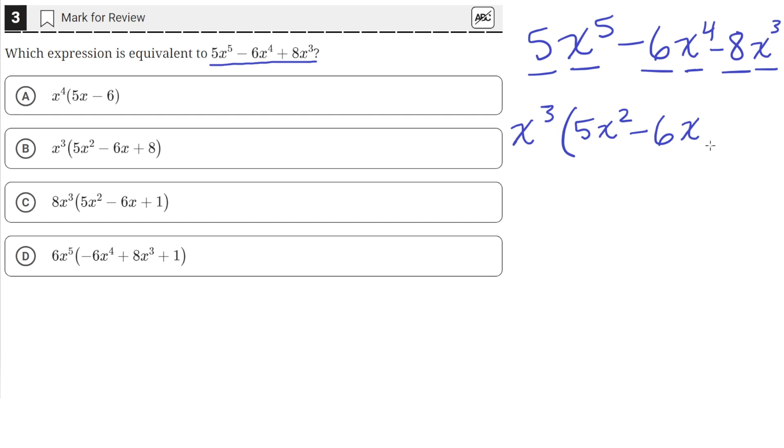So x cubed times x is just going to be adding the powers together. So 3 plus 1 is 4, so that would give us back the original term. So that's how we know that this is the correct factored out version.